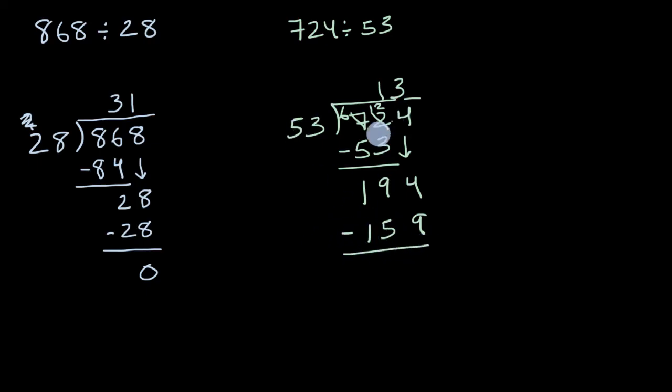And now let me subtract. Let's see, I can regroup again. I can take 10 from here, put it over here, so then that becomes 14. Fourteen minus nine is five. Eight minus five is three. And then 100 minus 100, or one minus one, is zero. So I'm left with a remainder of 35, and that is a remainder because I can't divide 53 into it anymore. So I get, this is equal to 13 remainder 35. And we're done.